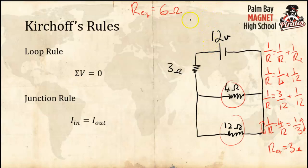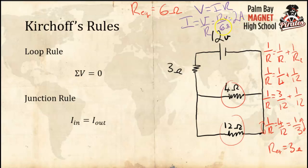Next I want to find the current coming out through the battery. We know that V = IR. I know the total resistance is 6 ohms, and the battery voltage is 12 volts. Rearranging, I = V/R = 12 volts divided by 6 ohms = 2 amps. So there is a 2-amp current coming through the battery.